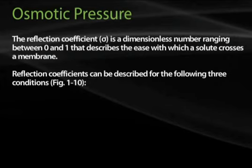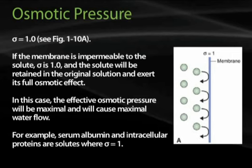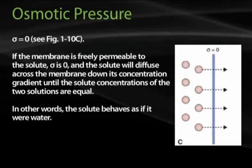Reflection coefficients can be described for the following conditions, as shown in figure 1-10. In figure 1-10a, also found on page 14, sigma equals 1. If the membrane is impermeable to the solute, sigma equals 1, and the solute will be retained in the original solution and exert its full osmotic effect. In this case, the effective osmotic pressure will be maximal and cause maximal water flow. For example, serum albumin and intracellular proteins are solutes where sigma equals 1.